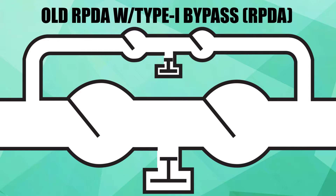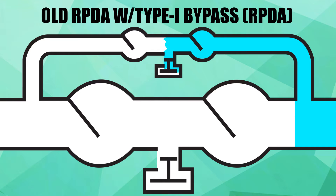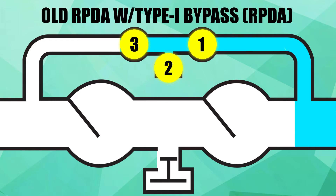Now, a comparison of the paths through the bypass. During a backflow condition on an old RPDA with a Type 1 bypass, the water first encounters the bypass second check. Next, the water encounters the bypass relief valve. And then the water encounters the bypass first check. This provides three mechanisms of backflow protection.